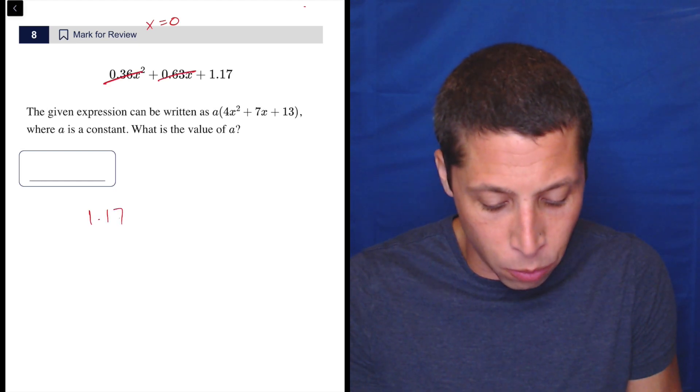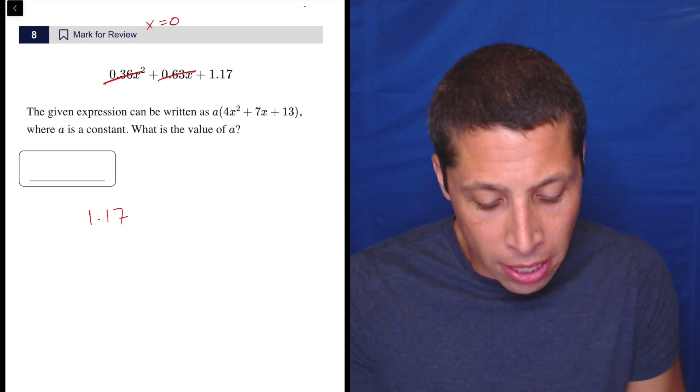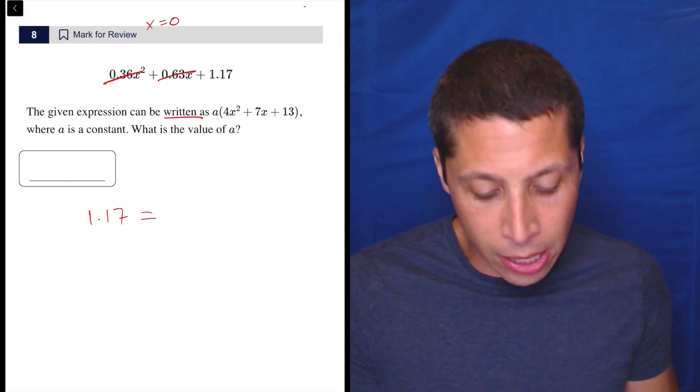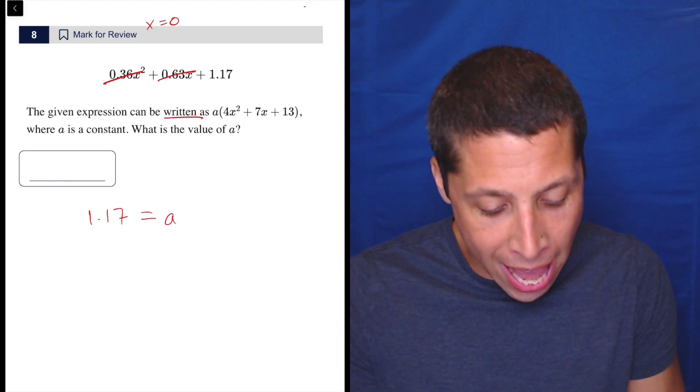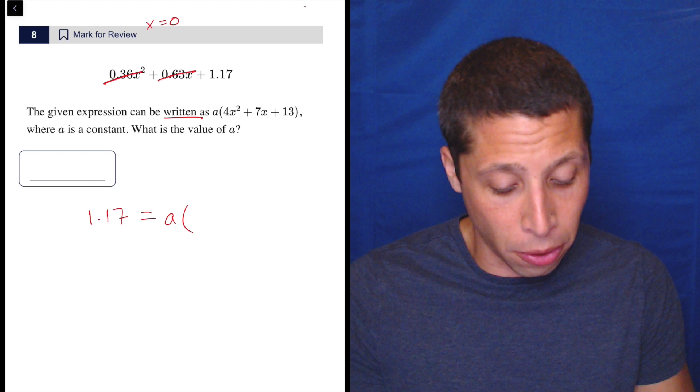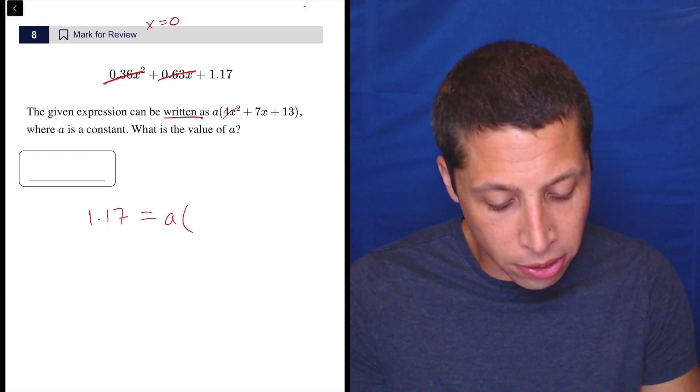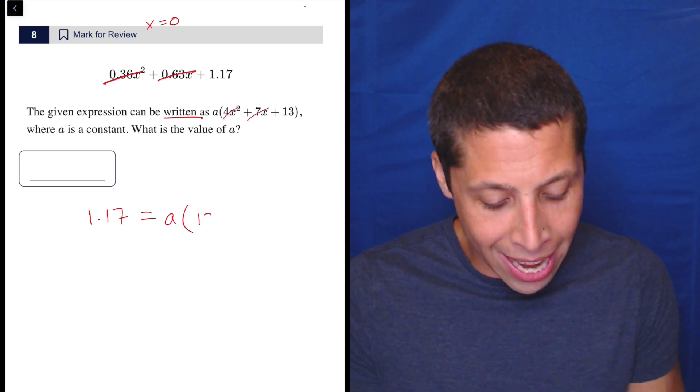We're left with 1.17. That expression can be written as this other thing, meaning it equals this other thing. And that's going to be a, which we need to find, times this other thing. But again, if x is zero, this goes away and this goes away. So it's really a times 13.